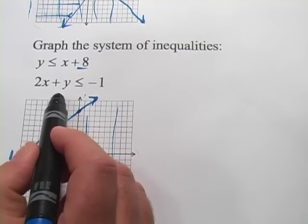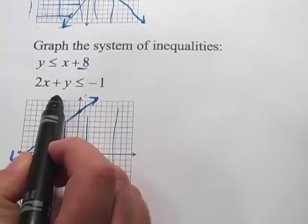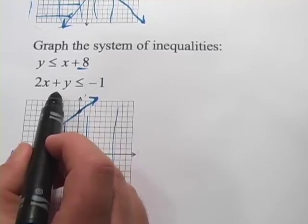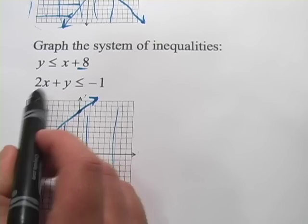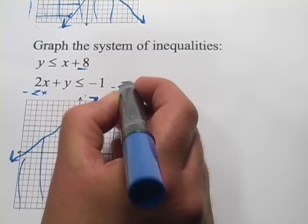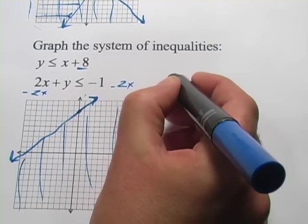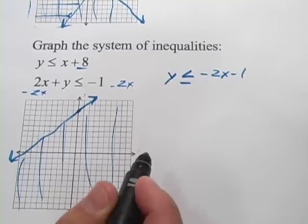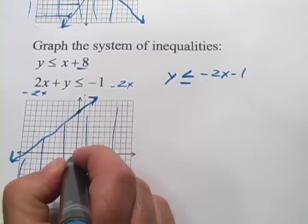And then we've got, now here we have to do some moving around here. This inequality is not in y equals mx plus b form. But it's pretty easy. I'm just going to subtract 2x from each side, and I get y is less than or equal to negative 2x minus 1.